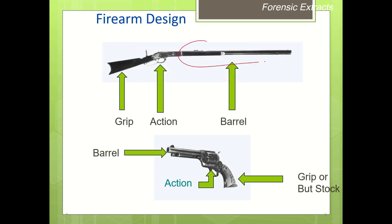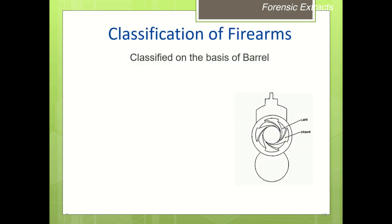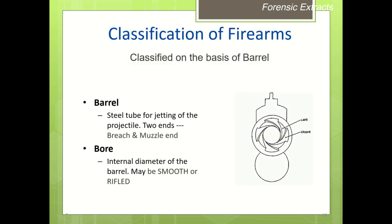Regarding firearm design, a firearm has three basic parts: the barrel, the action, and the grip. In a long gun, these correspond to the barrel, the action, and the grip or butt stock. Classification of firearms can be done on the basis of the barrel.